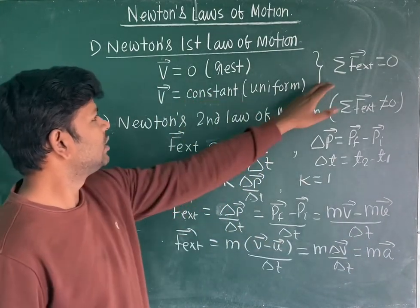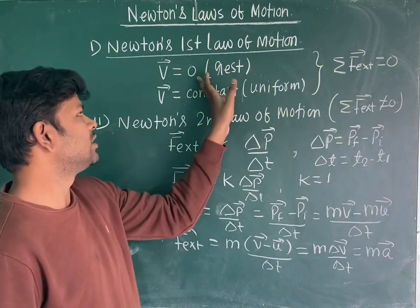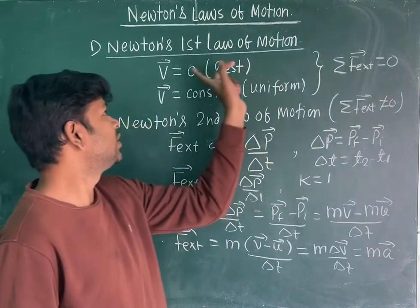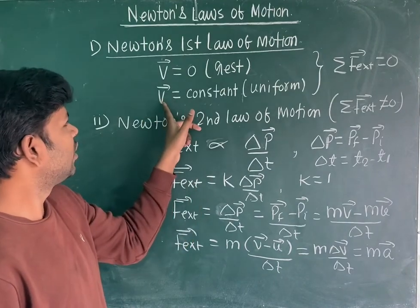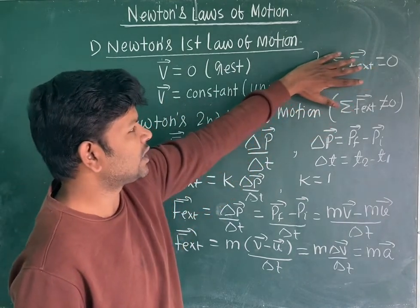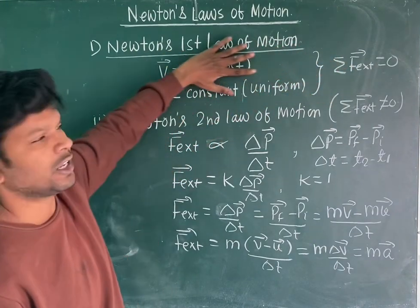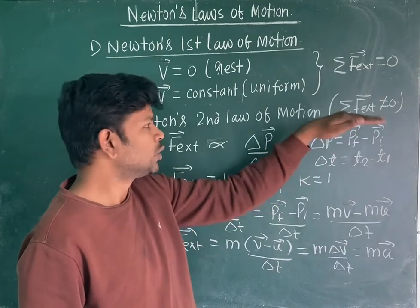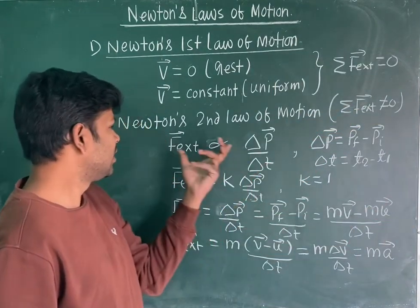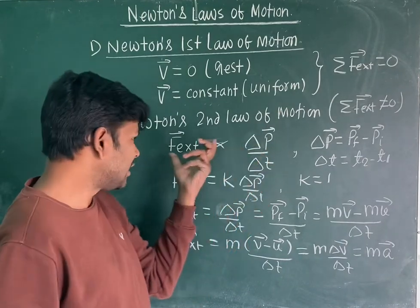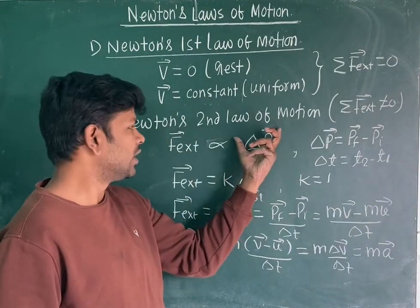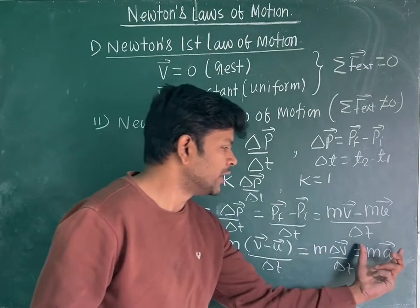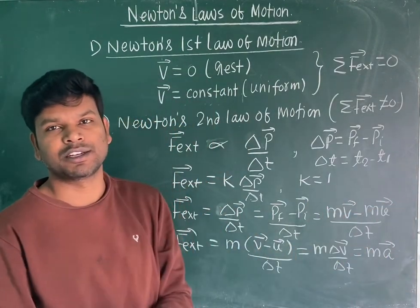Newton's first law: if V equals 0 — either the object is in the state of rest or uniform motion — then external force equals zero. This case is known as translational equilibrium. Now if the net external force acting on the system is not equal to zero, there will be a change in momentum with respect to time. That net external force is directly proportional to rate of change of momentum with respect to time, and the final expression is: net external force equals M times A, mass times acceleration of the object.